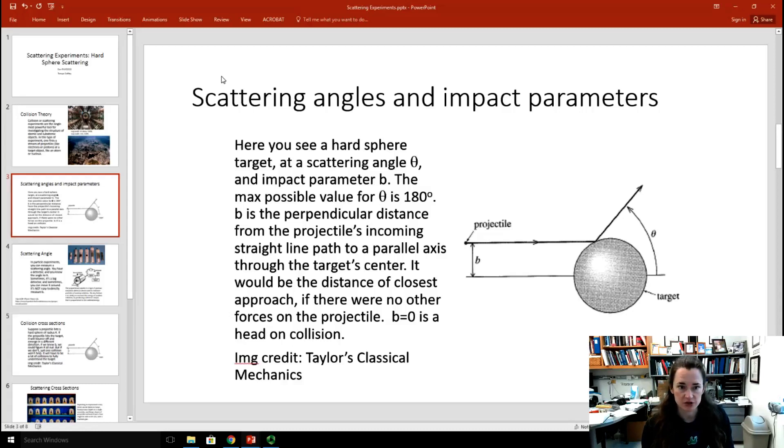Looking at this image, you see a hard sphere target, and then you see a little tiny projectile that's basically a point particle. It's incident on it, coming from the left, moving towards the right, strikes the sphere, and then scatters off at some angle theta.